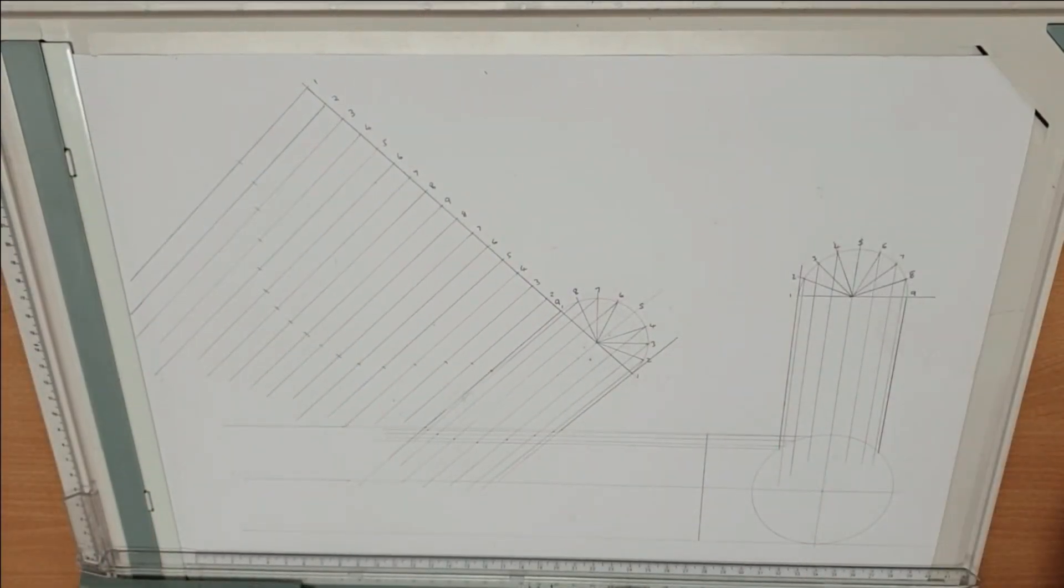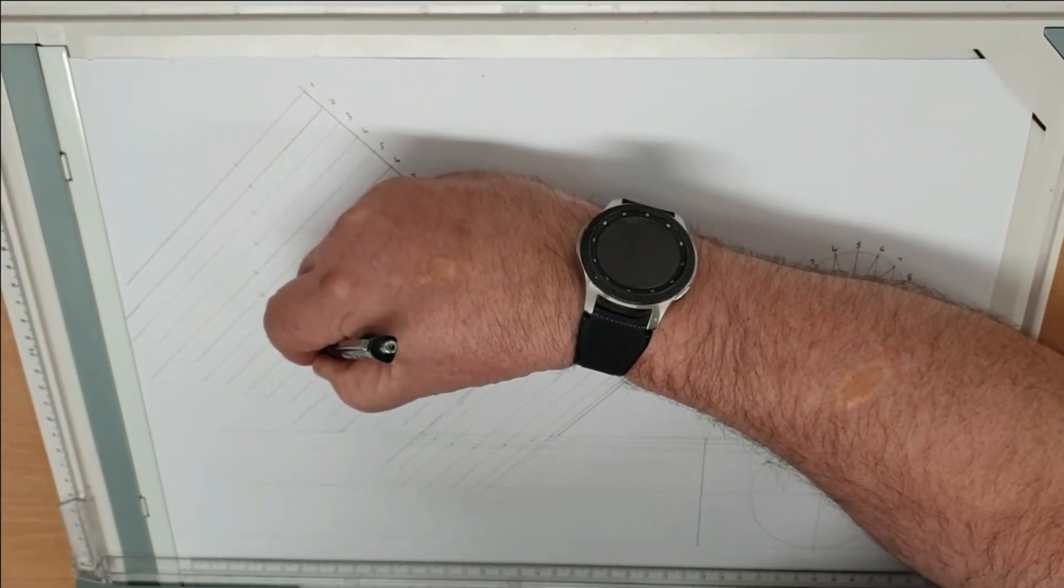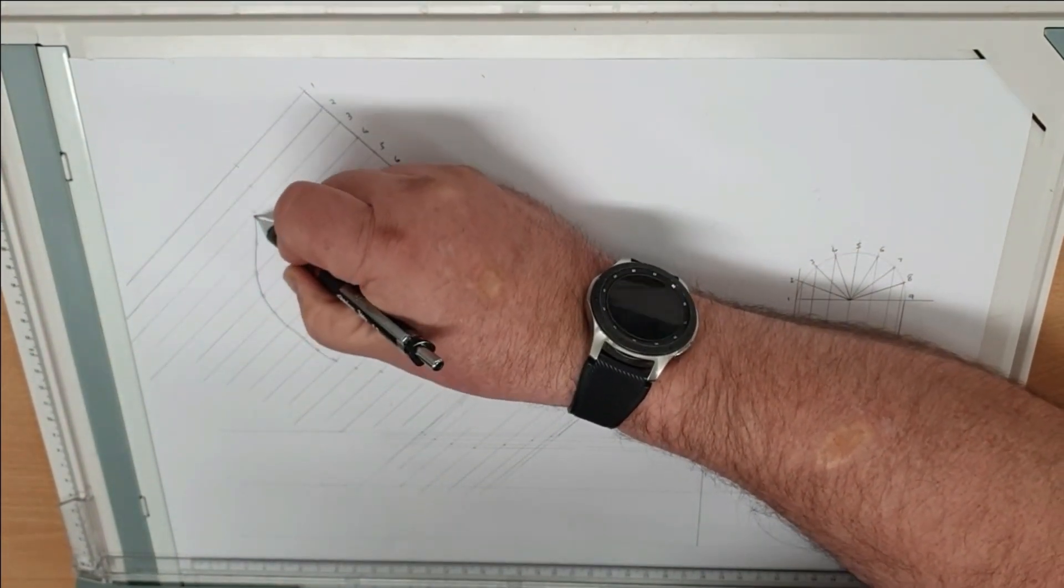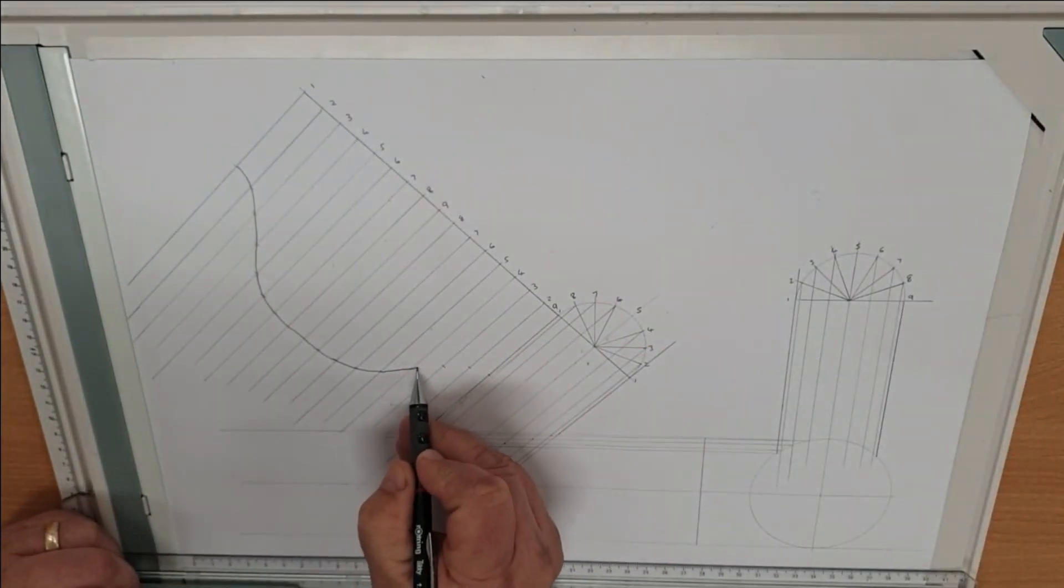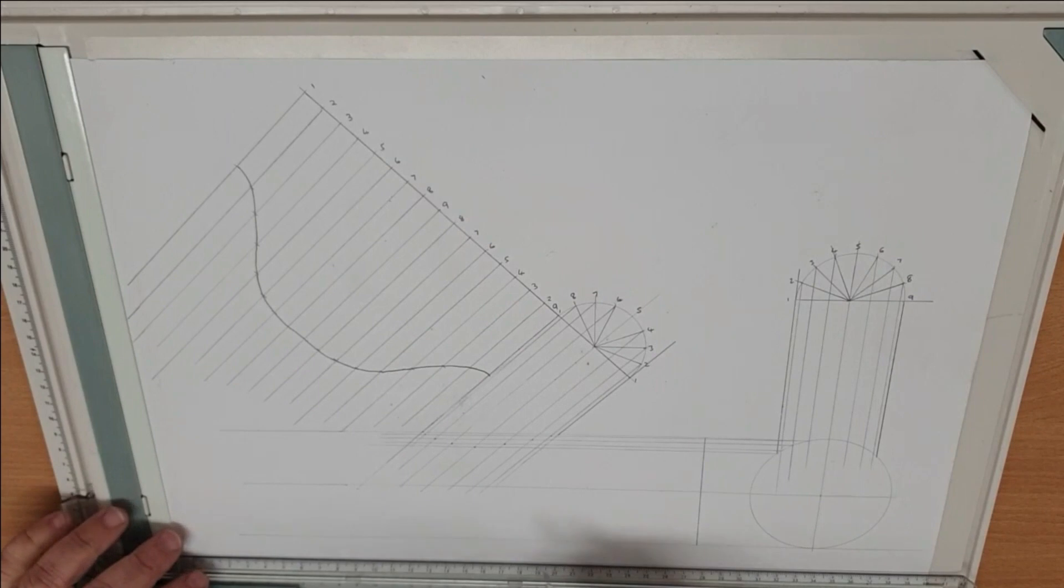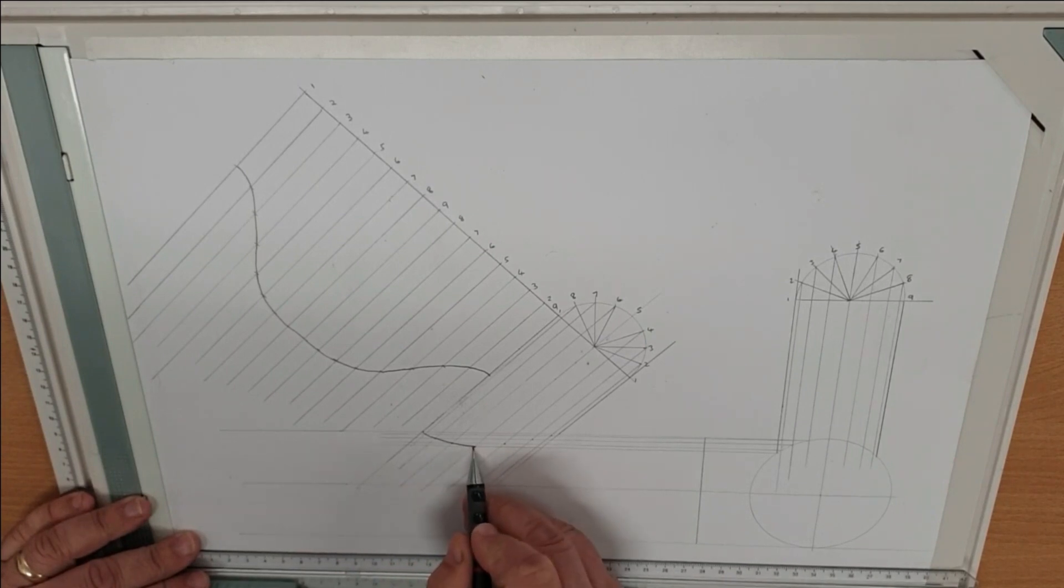So now with those complete, we can now draw the shape of our pattern. So if we cut that out and then wrap that round the end of our tube, it will give us the profile on the end.